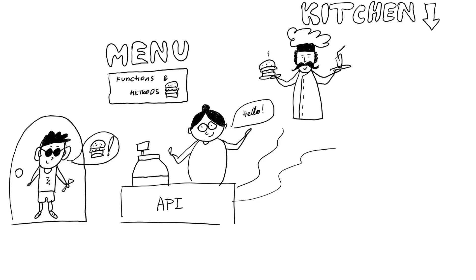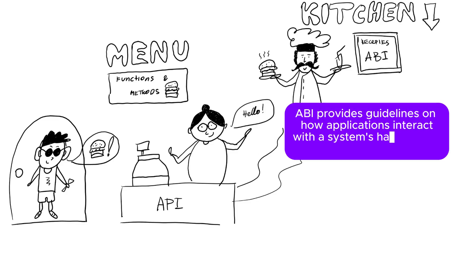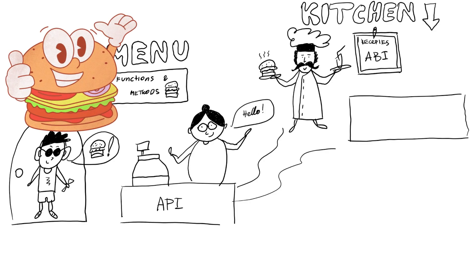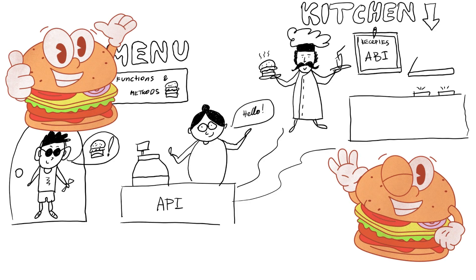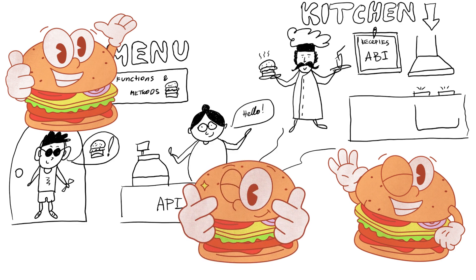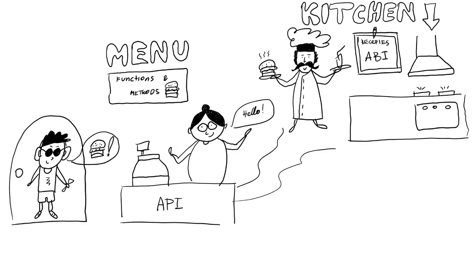Think of the ABI, or Application Binary Interface, as a collection of recipes. Just like a recipe gives you exact instructions and ingredients to prepare a dish, the ABI provides guidelines for how software components interact with the system and with each other. These recipes ensure that no matter who's cooking, the dish turns out the same. For instance, a burger from one McDonald's tastes just like a burger from another McDonald's — even if you're in a different country, it's still the same burger. Similarly, the ABI ensures binary compatibility across different programs.